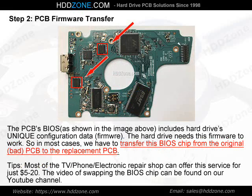Step 2: PCB Firmware Transfer. The PCB BIOS, as shown in the image above, includes the hard drive's unique configuration data — firmware. The hard drive needs this firmware to work, so in most cases we have to transfer this BIOS chip from the original, bad PCB to the replacement PCB.